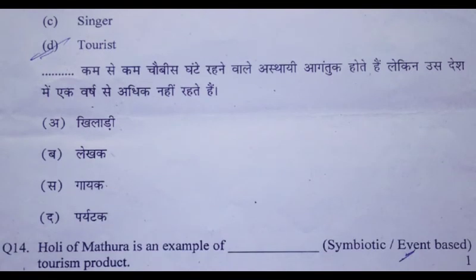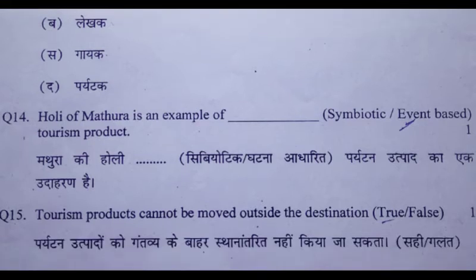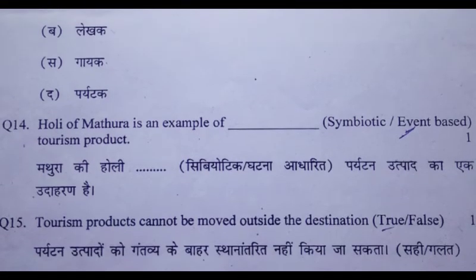Question 14: Holi of Mathura is an example of dash — Symbiotic or Event-based tourism product? Question 15: Tourism products cannot be moved outside the destination. True or False.